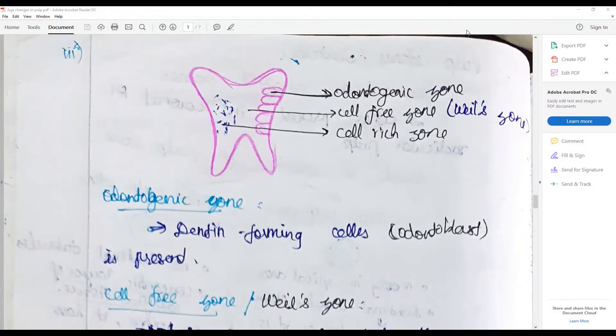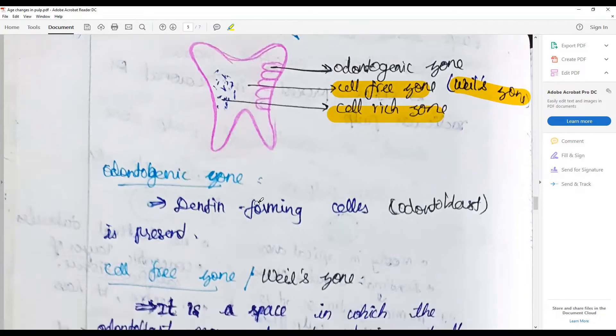The dentin-pulp complex immediately subadjacent to the odontogenic zone is a zone that is devoid of any cellular elements, called the Weil zone or cell-free zone. Next is the pulp core or the cell-rich zone. This is going from the dentin to the pulp.